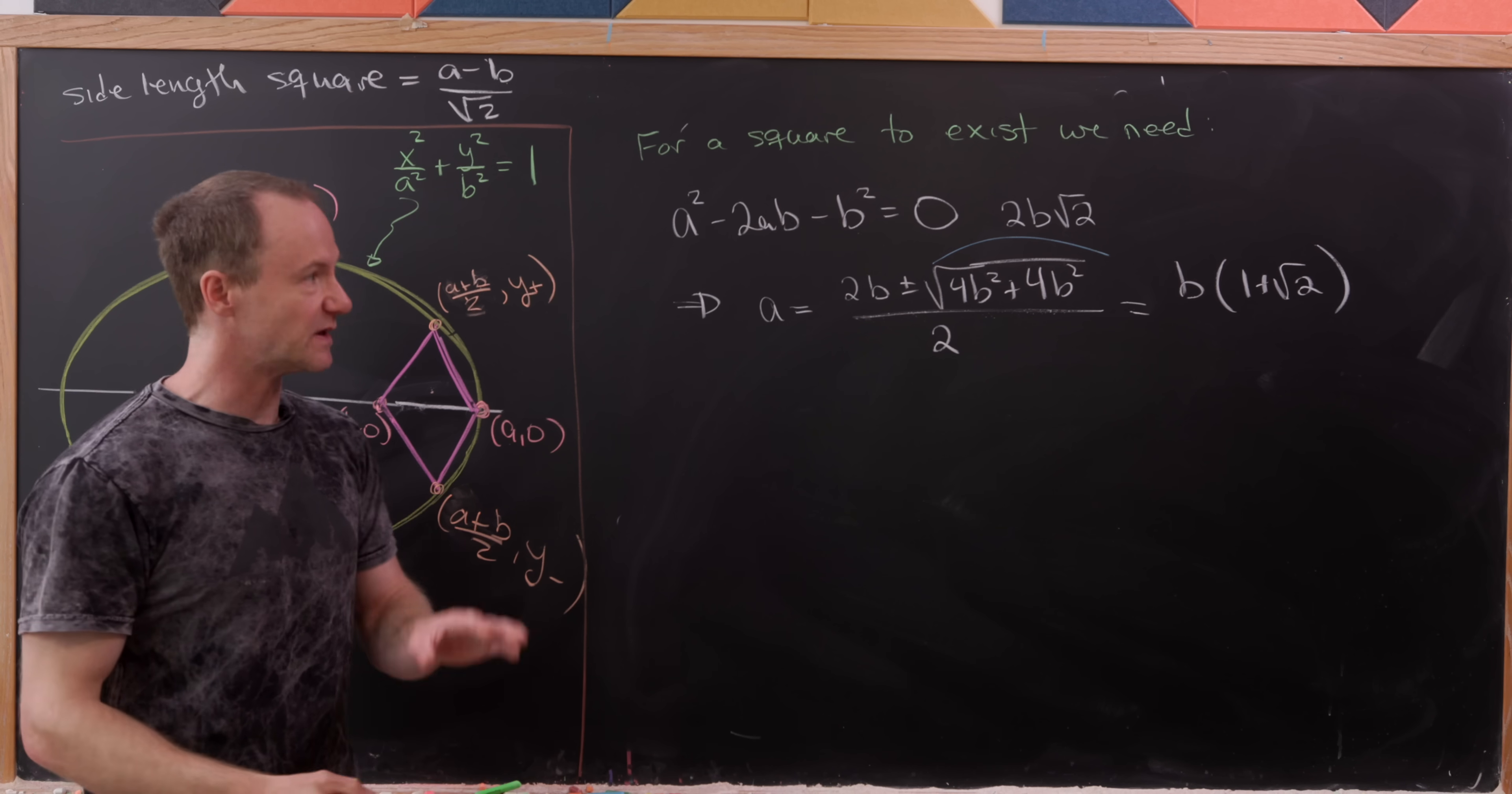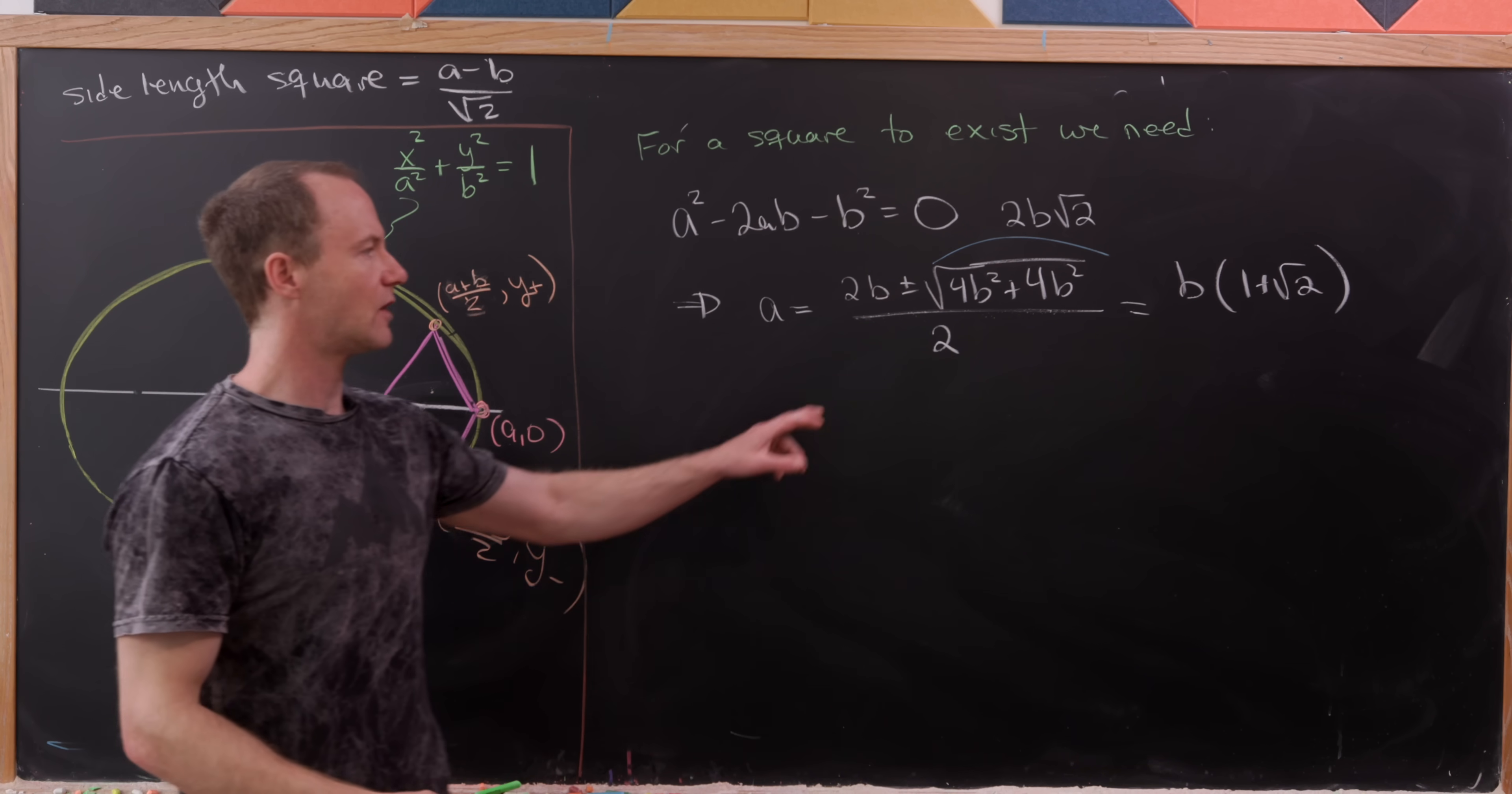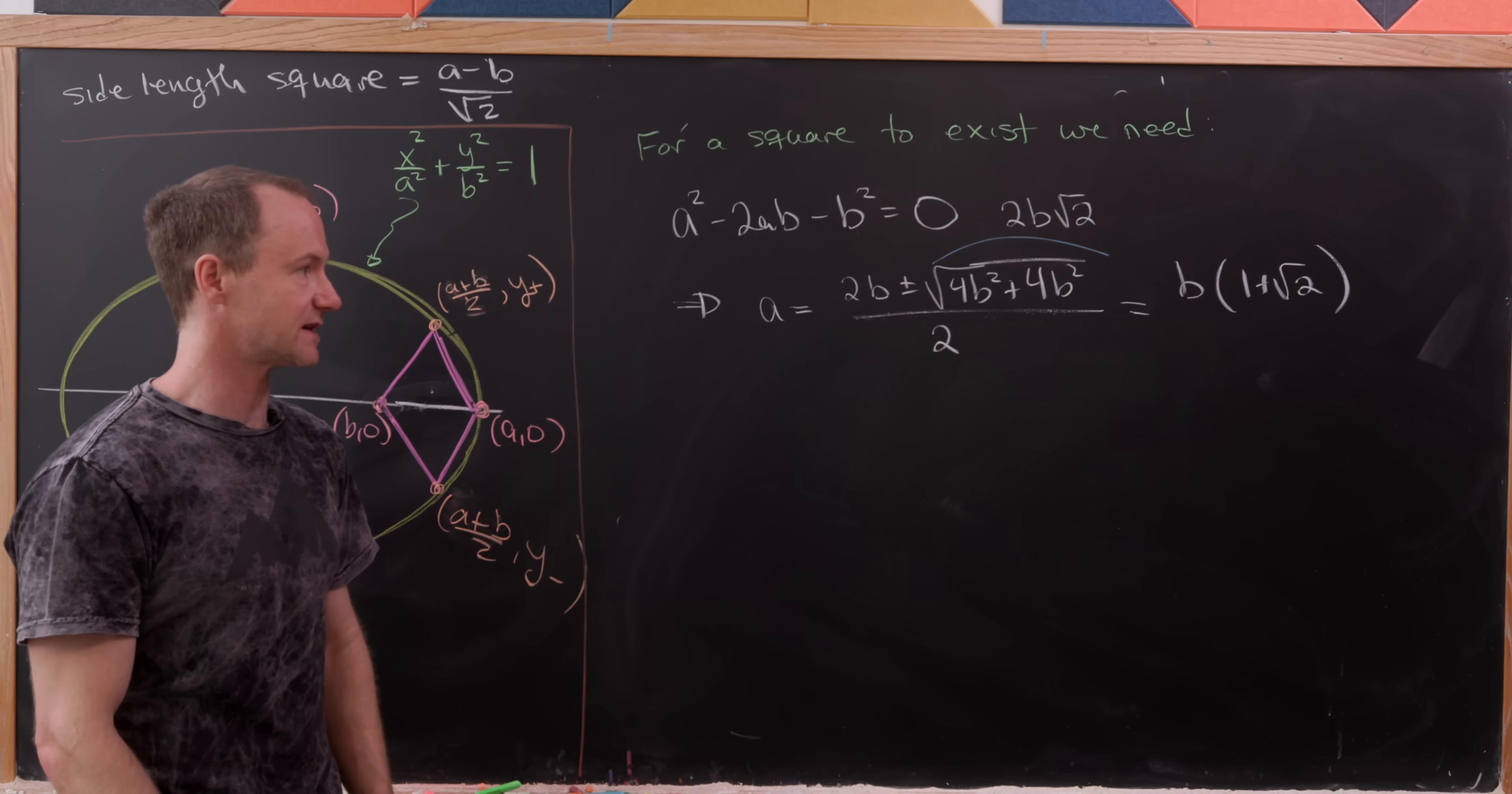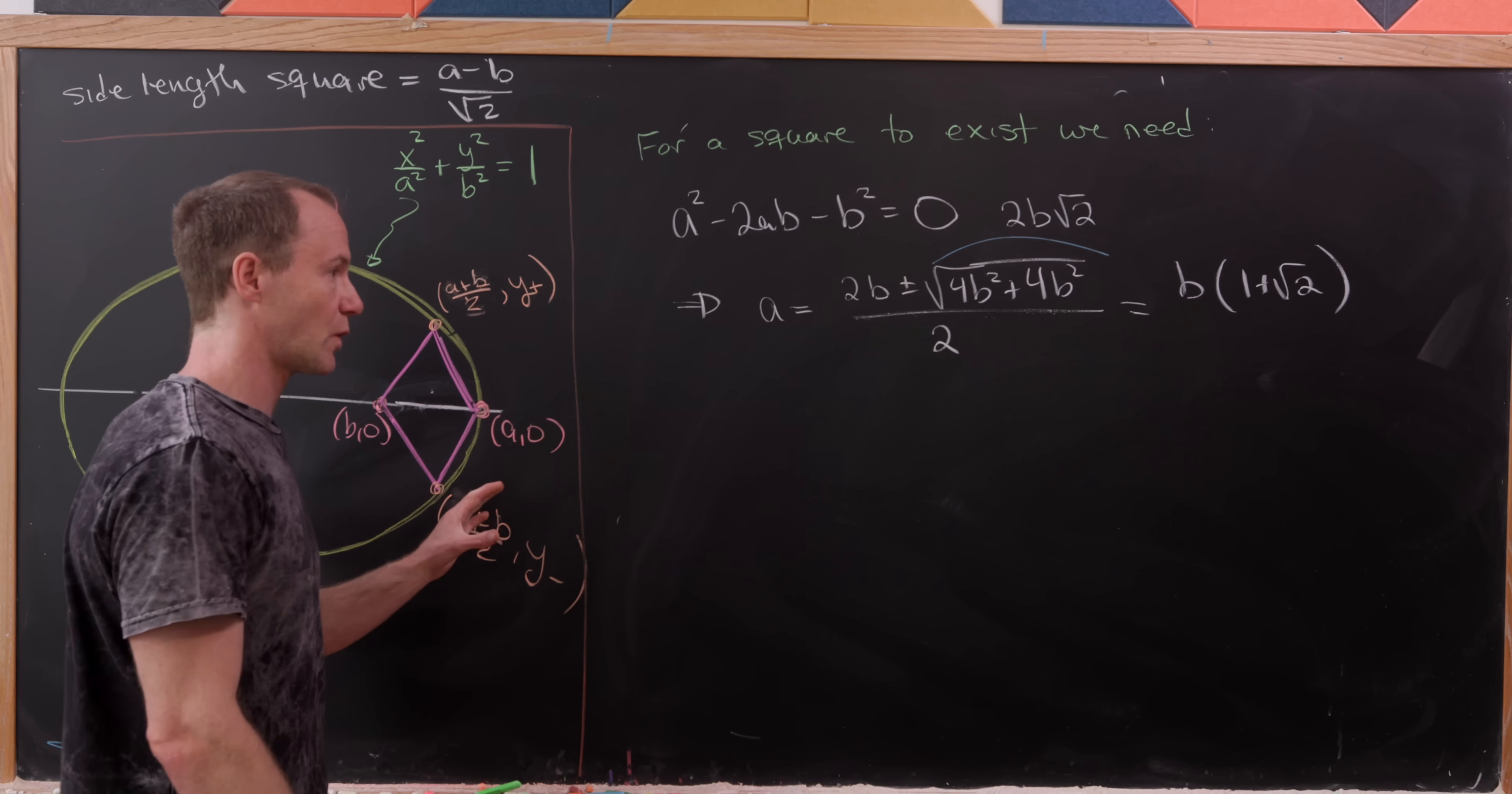So in other words, a = b(1 + √2). Notice I can get rid of the minus sign there because I would get a negative length for a, which clearly doesn't make any sense. So that's the relationship we need for such a square to exist.